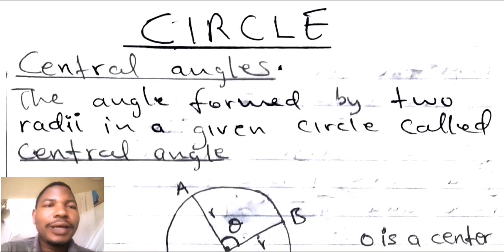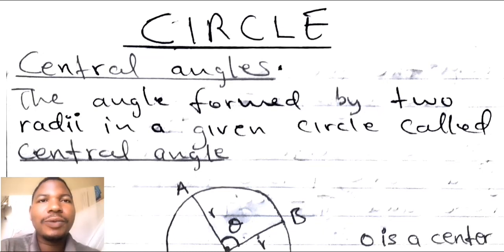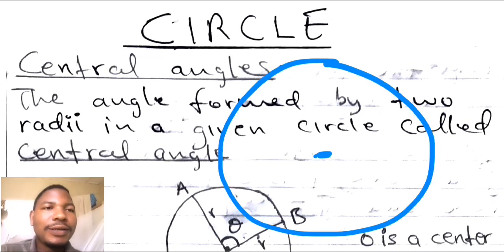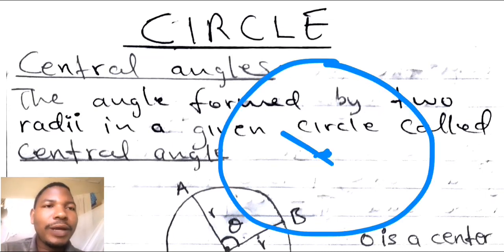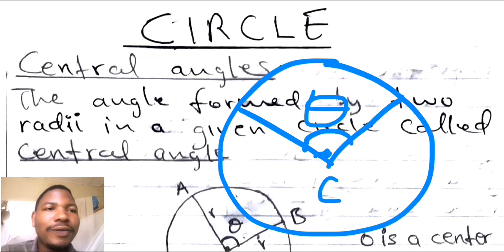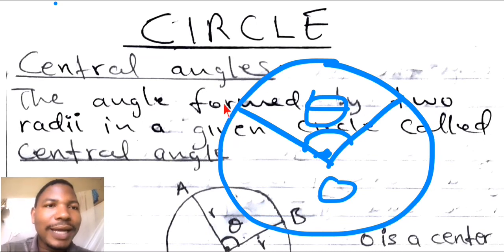Central angle: this is the angle made up by using two radii from the circle. Assume you have a circle like this one — this is your circle, this one is the center of the circle. If you have two radii, the first radius here and second radius here, then the angle made up by these two radii is what you call the central angle, if and only if this one is the center of the circle.